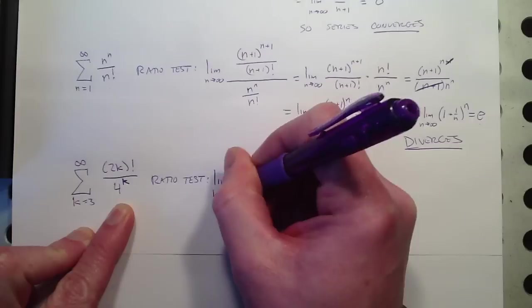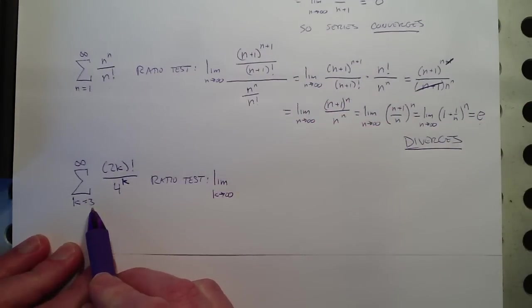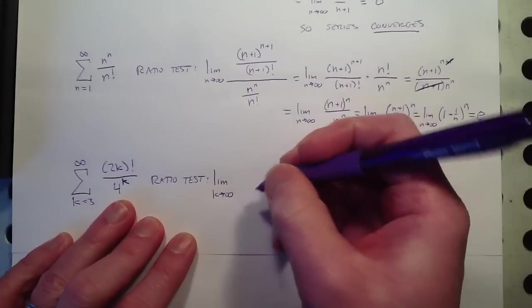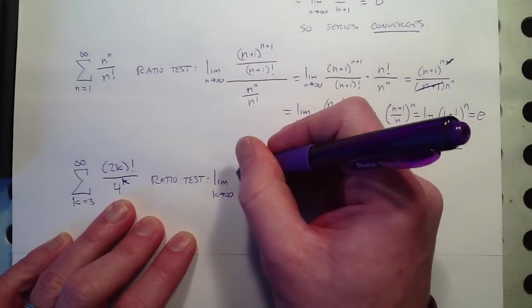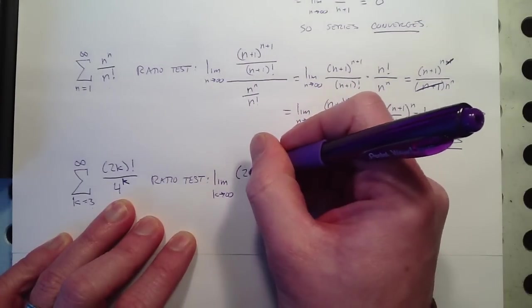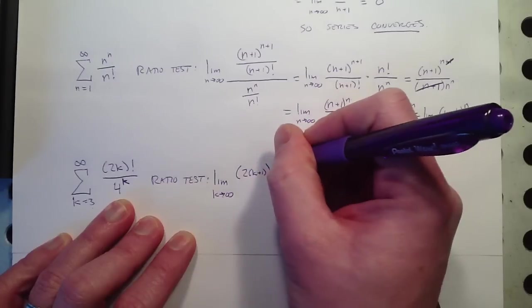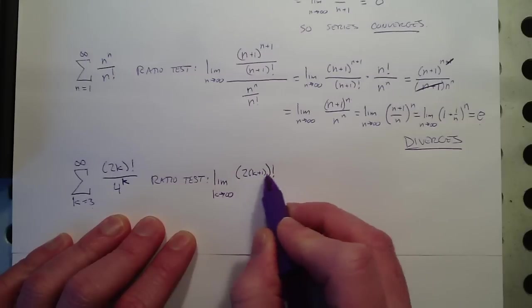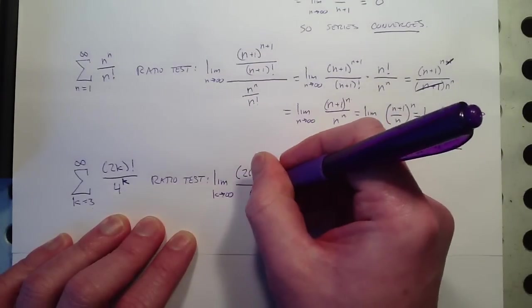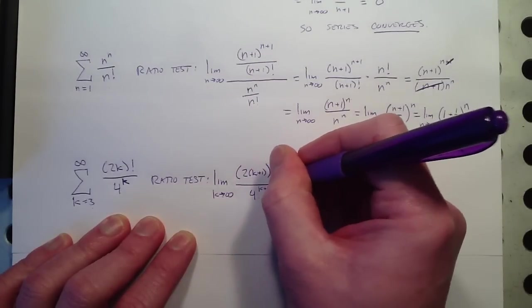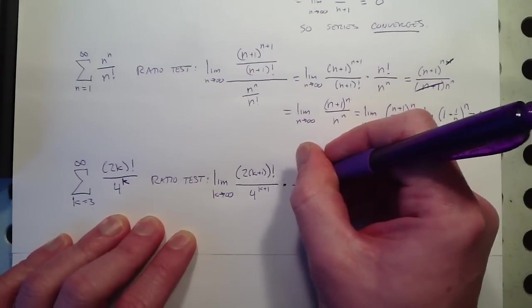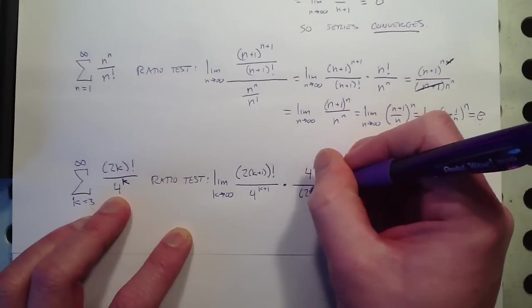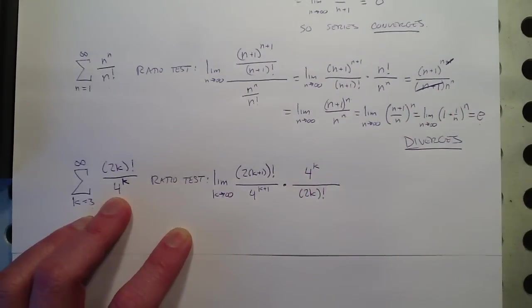So use the ratio test again there's factorials and k's as exponents. Now I'm going to go ahead and take the shortcut this time k approaches infinity. Notice that where we started doesn't matter at all that's not going to play into the ratio test at all it doesn't matter where we start. So I'm going to do the k plus 1 term that's I'm going to be careful here 2 times k plus 1 factorial, right the whole k has to be the 2 is going to multiply the whole k plus 1, over 4 to the k plus 1 and then I'm going to divide by the original that's the same as doing that right multiplying by the reciprocal.